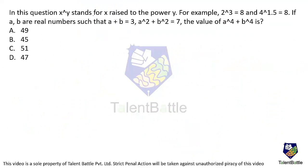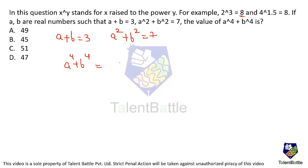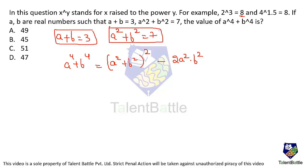Next question: x^5 denotes x raised to the power y (e.g., 2^3 = 8 and 4^1.5 = 8). Given real numbers a and b such that a + b = 3 and a² + b² = 7, find the value of a⁴ + b⁴. The formula is: a⁴ + b⁴ = (a² + b²)² − 2(ab)². We need to find ab.